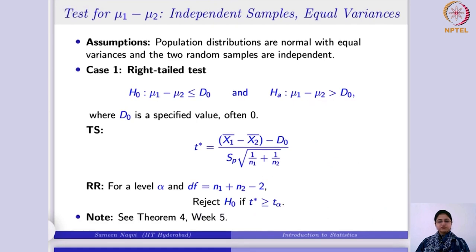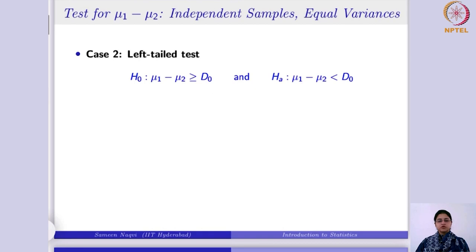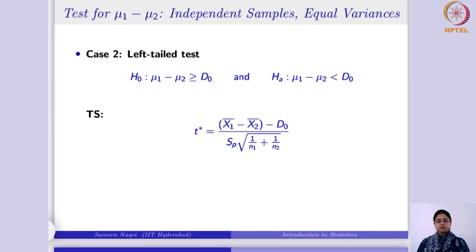I would suggest you look at Theorem 4 in week 5 because there we obtain the pooled variance concept. Likewise, you can have the left tail test. In the left tail test, the alternative is that the difference of the two population means is less than the specified value. The test statistic remains the same; the difference comes in how the hypotheses are framed and the rejection region.